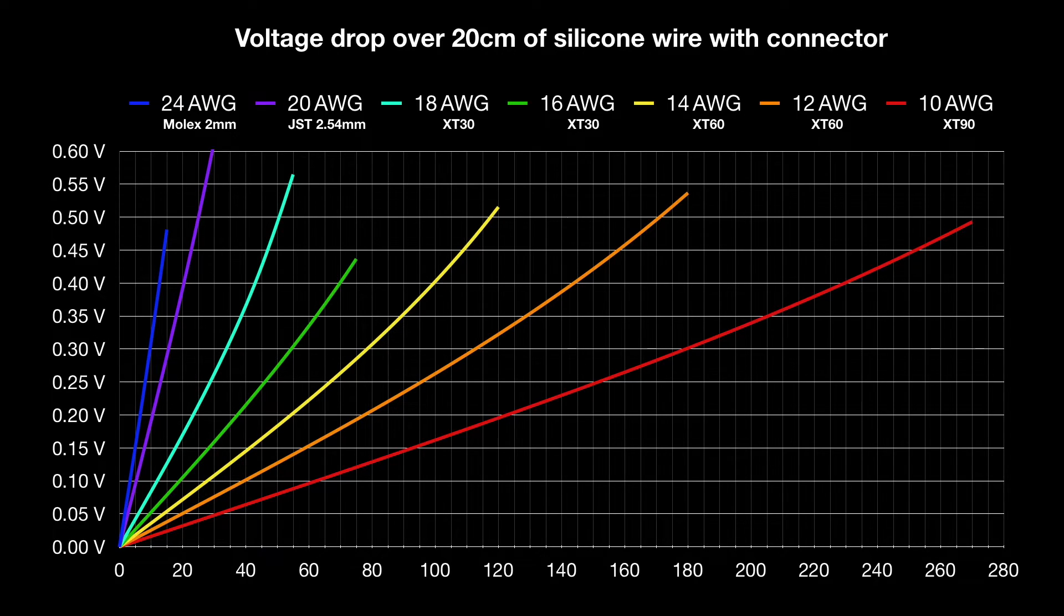On the other hand, if you have a small drone that only takes 50 amps in a punch but you're still using an XT60 connector, you might consider reducing it to an XT30 and a thinner wire. You only lose a little more voltage, but you can save some weight.